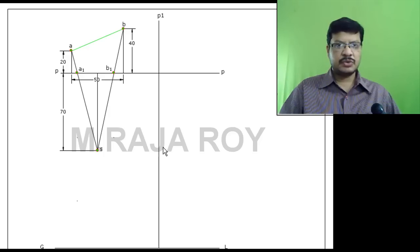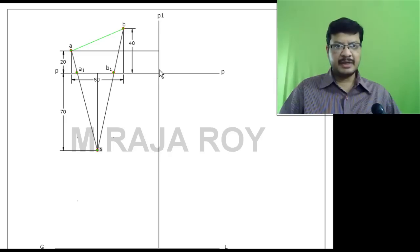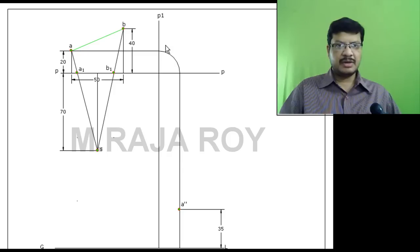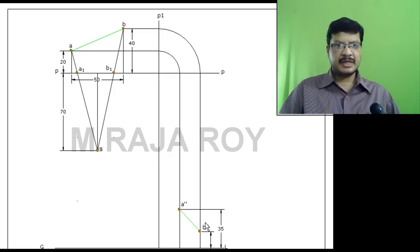After that, take a profile plane P1 as shown. Project the side view onto the profile plane. From A1, draw a locus line. Take the intersection point of the PP line and P1 as center and that distance as radius, draw an arc, then draw the projector. On this projector, represent the height of point A, which is 35mm — this is A double dash. From B1, draw the locus, draw the arc, draw the projector, then represent the height — that is B double dash. The line joining A double dash and B double dash is the side view.